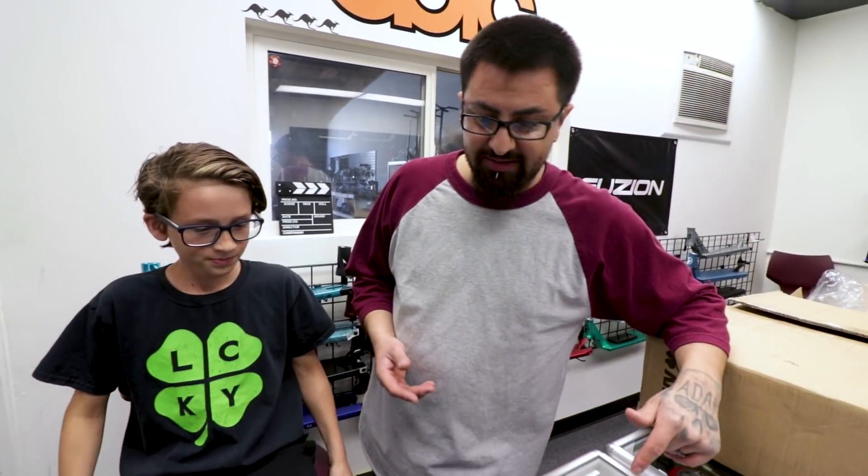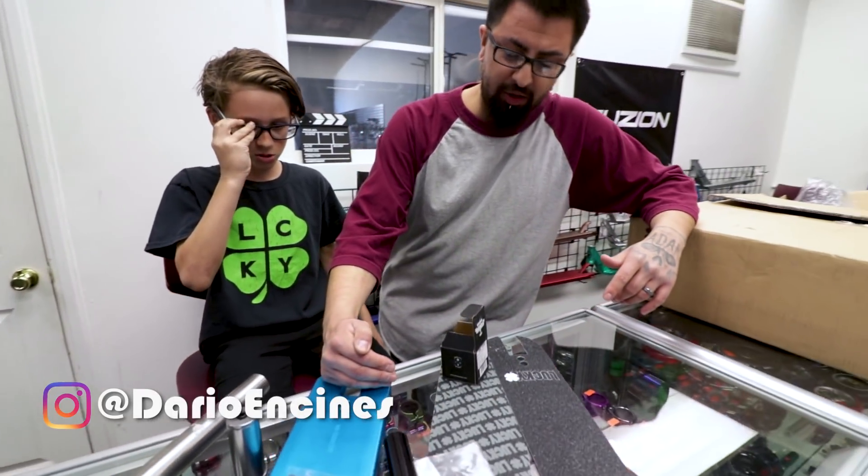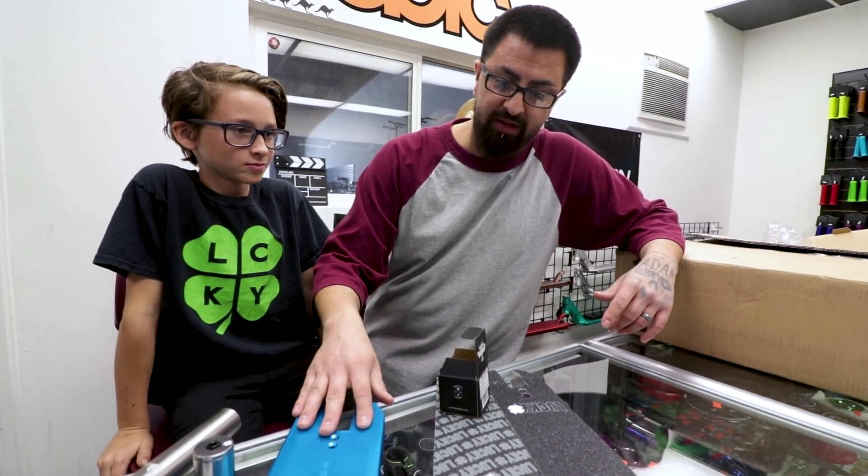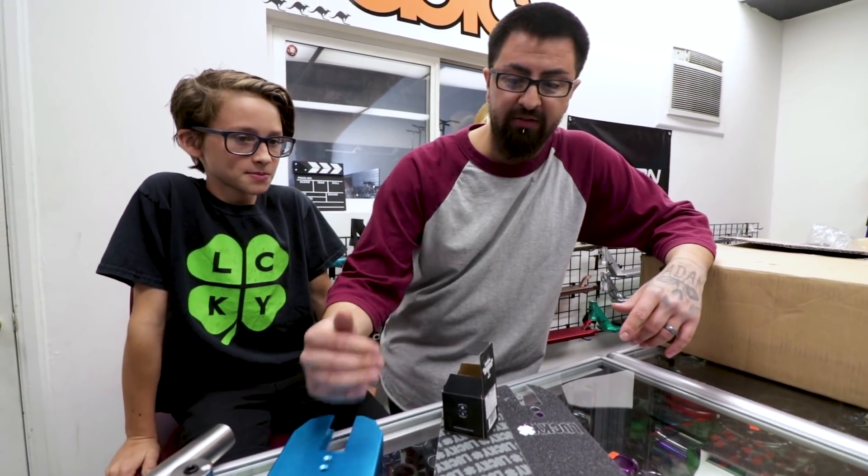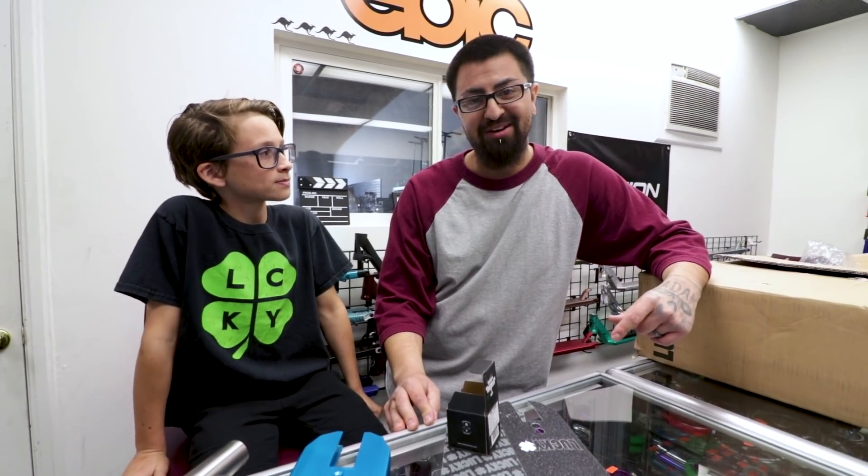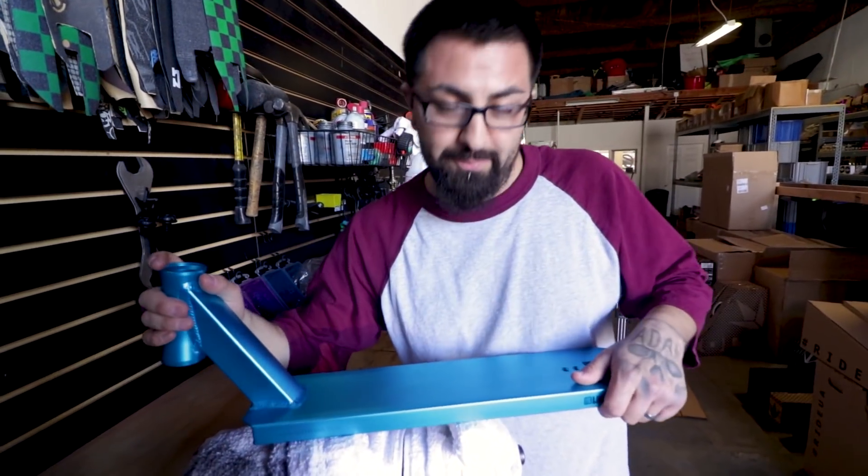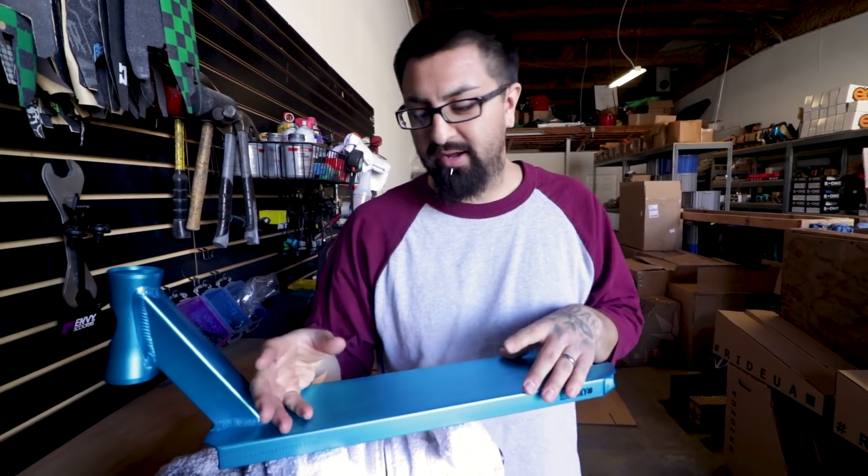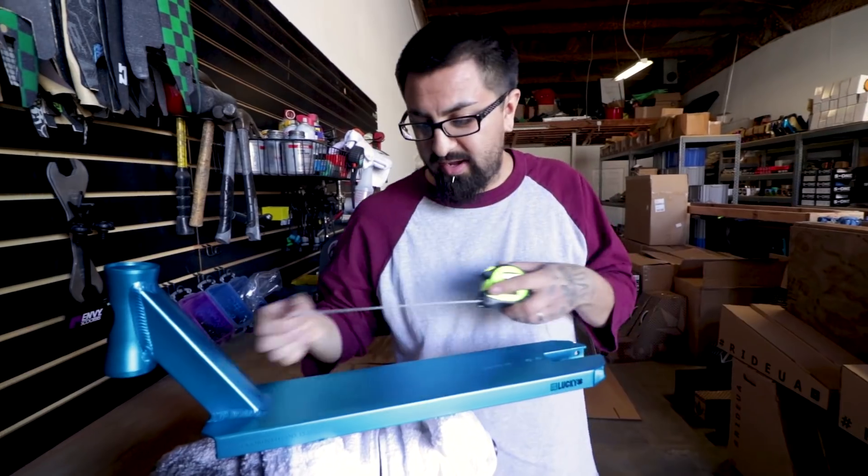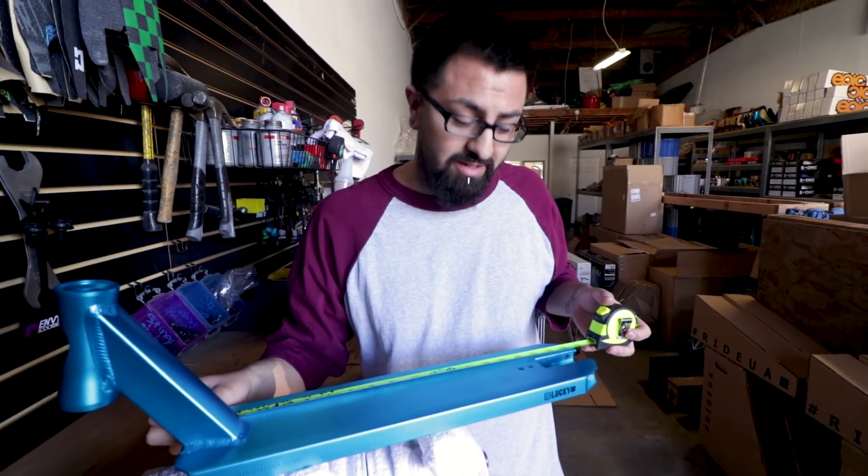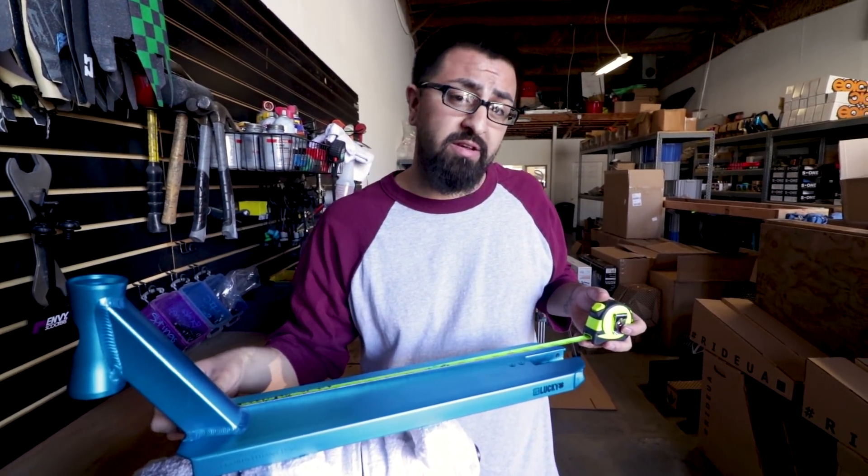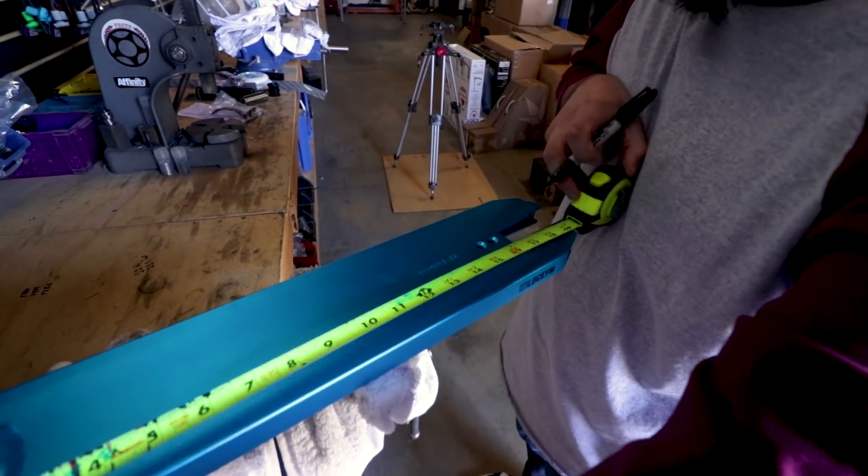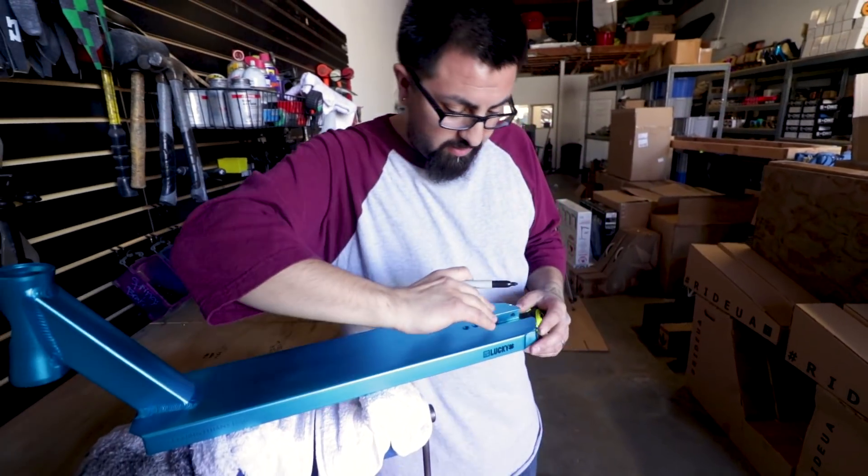So next step, I'm gonna go step by step and show you how to properly cut down a deck, measure everything and get it all dialed in. My first step in cutting a deck is you find out the measurements. This specific deck is 19 and a half. What Brig wants it cut down to is 17 and a half. So I'm gonna take off two inches. I'll make a little mark right at 17 and a half on both sides of the dropouts.